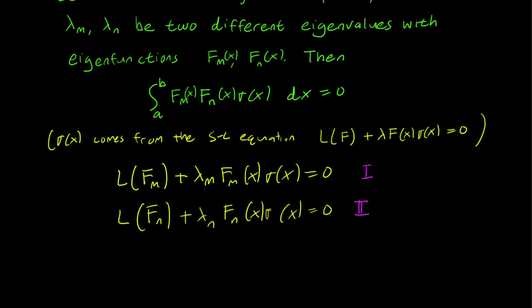What we can do now is multiply the first equation by F_n, and multiply the second equation by F_m, and subtract the two equations.